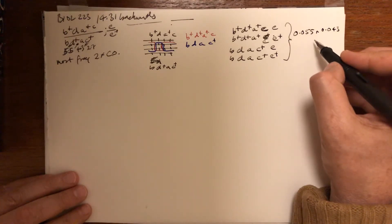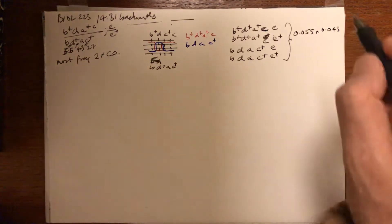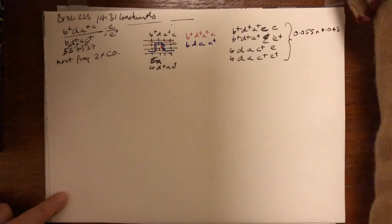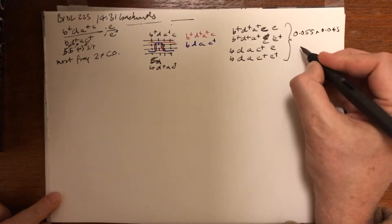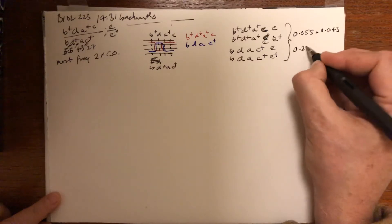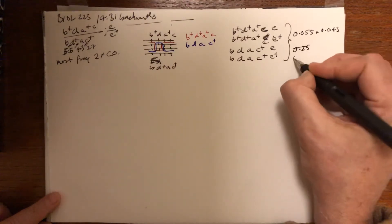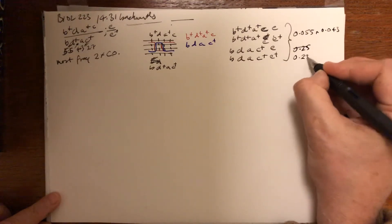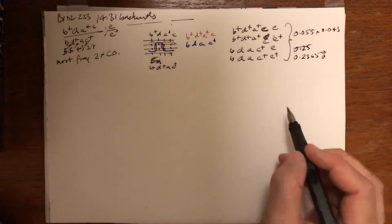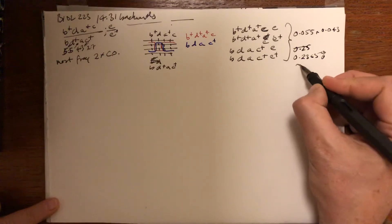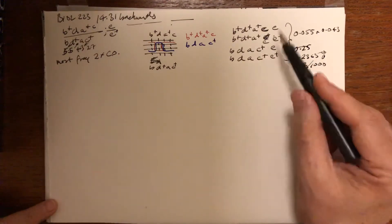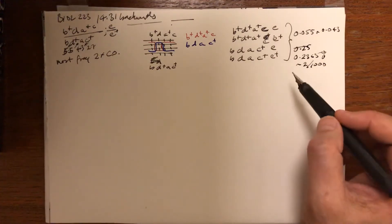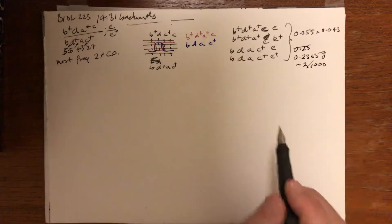That would be about 2.365% — the exact number doesn't have that precision. In 1,000 progeny, that's about 2 per 1,000. We might or might not see that — we might see two of these, we might see none of these. In the book, indeed, when showing the progeny for this problem, this class isn't represented.